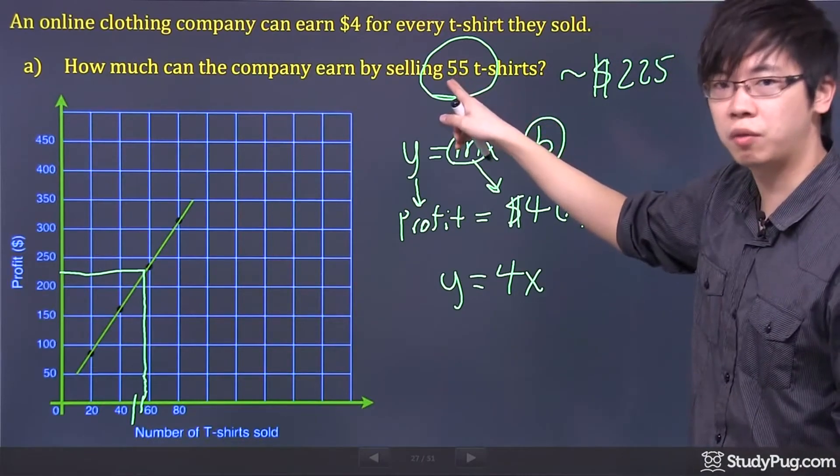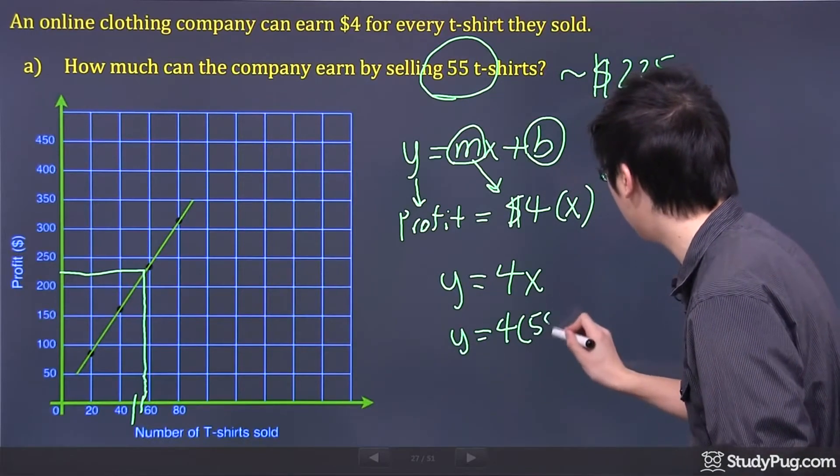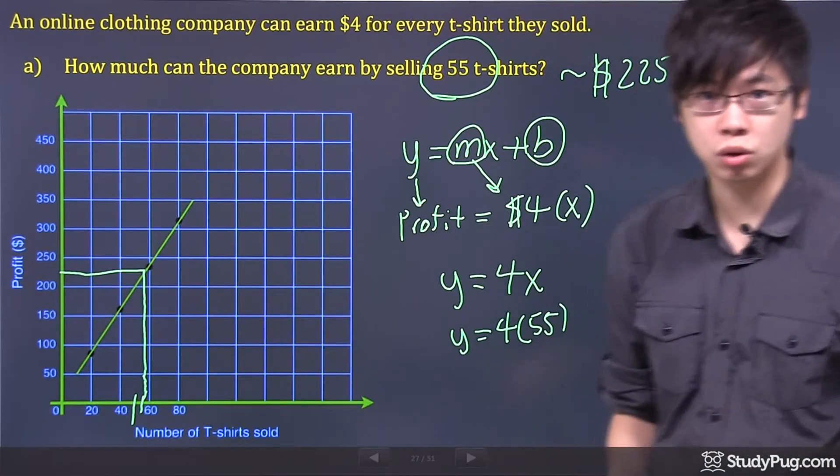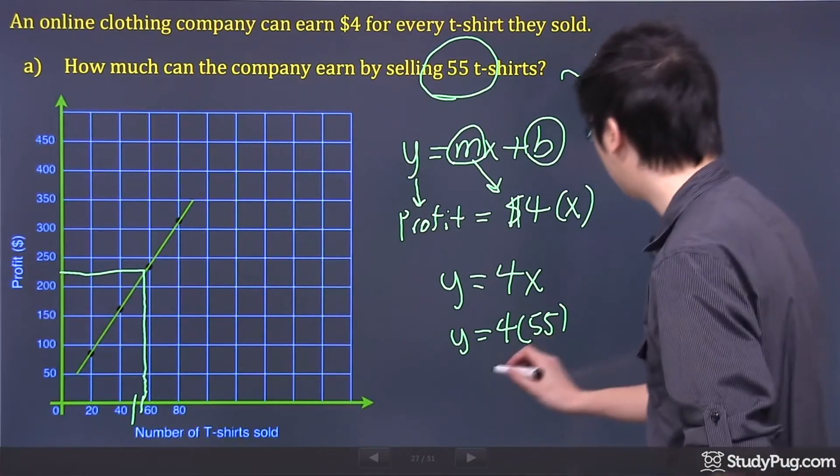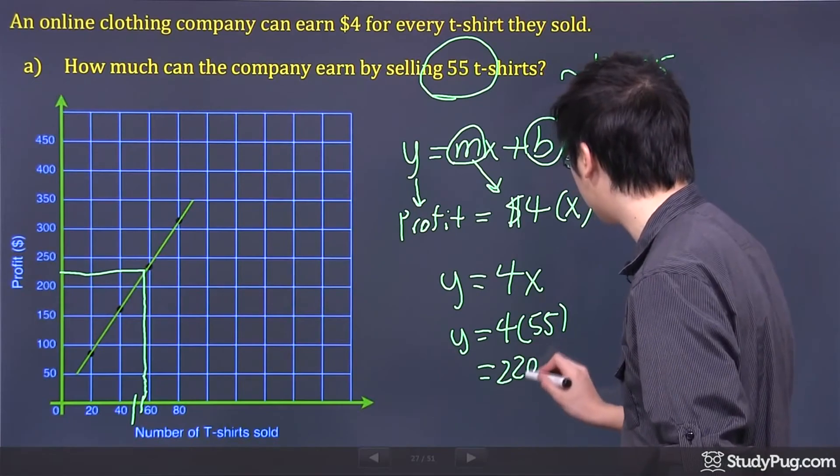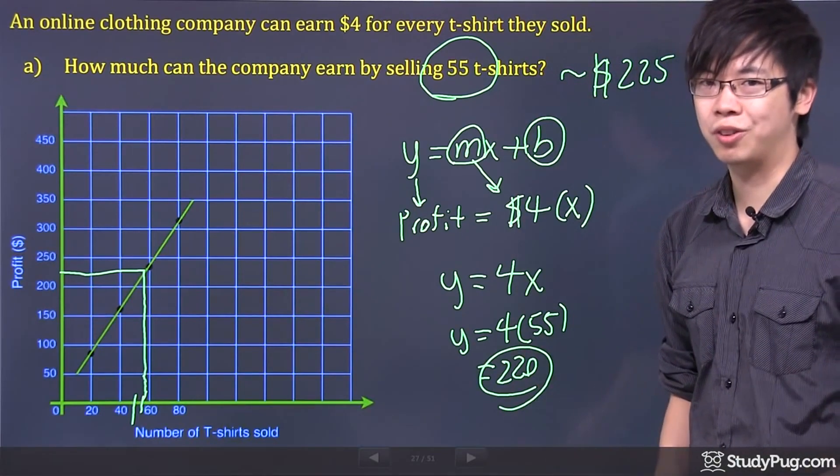So what we're going to do is we're going to punch in the 55 right here to figure out how much money that we're going to make if I sell 55 t-shirts, right? So you grab the 55, you times by 4, you get yourself $220. And that is very close to our approximation. Let's check on the next part for this one.